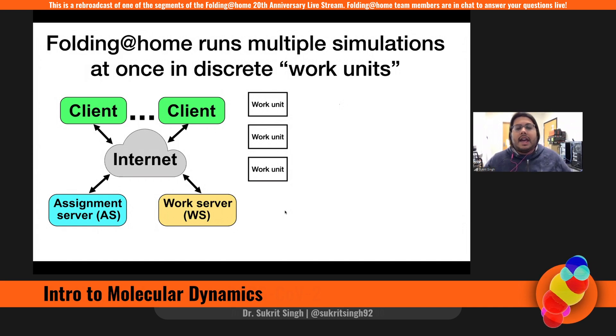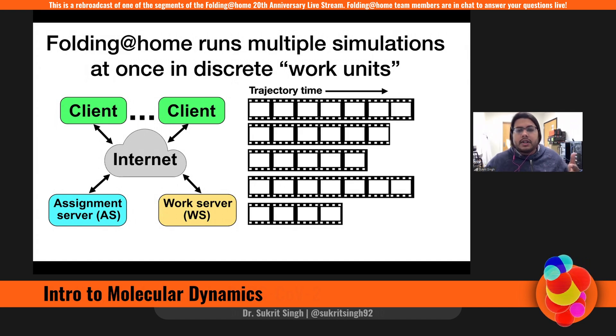And what then happens is a work unit is sent out to a client, it's run and it's returned. And that work unit is then subsequently used to generate the next work unit. So if you've noticed, many projects are assigned a PRCG project run clone gen. There could be any number of runs and clones, but in the left work unit here is gen zero and the right is gen one. So gens are always consecutively generated in time as clients run them. And so over time we'll generate multiple work units until eventually we stitch them together to generate these movies as a whole.